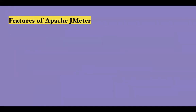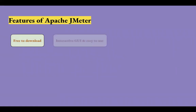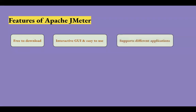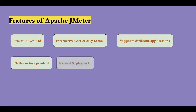The features of JMeter are: it is an open source application so you do not need to pay anything to download it. The GUI of JMeter is simple, very interactive, and easy to use — easy to learn compared to other performance testing tools. It supports various protocols for different types of applications, and it is independent of platform because you can download it on any operating system where you have Java installed. JMeter also provides the feature of record and playback for scripts.